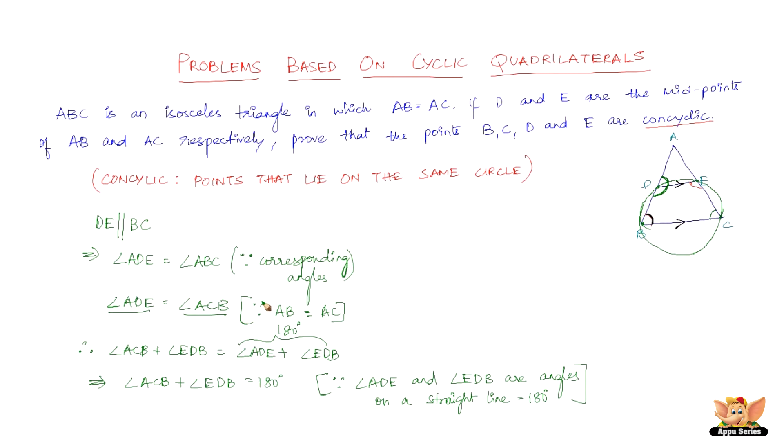All we need to prove that the points B, C, D and E are concyclic is to prove that one pair of opposite angles are supplementary, and we have done just that by proving angle ACB plus angle EDB equals 180 degrees.